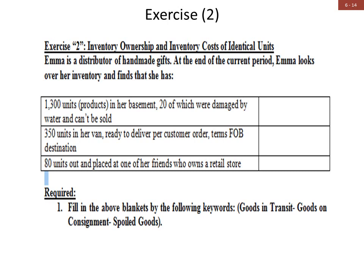Situation one: 1,300 units in her basement, 20 of which were damaged by water and cannot be sold. Because 20 are damaged and cannot be sold, we consider those as spoiled goods. Situation two: 350 units in her van ready to deliver per customer order, terms FOB destination. Those 350 units represent goods in transit; Emma is the seller and the terms are FOB destination, meaning they are still owned by Emma the seller until they reach the buyer's destination. Situation three: 80 units placed at one of her friends who owns a retail store — those represent goods in consignment.